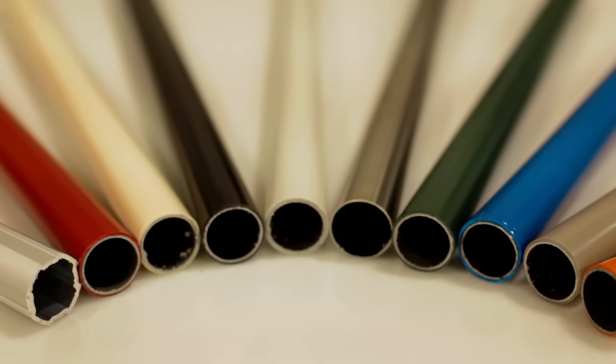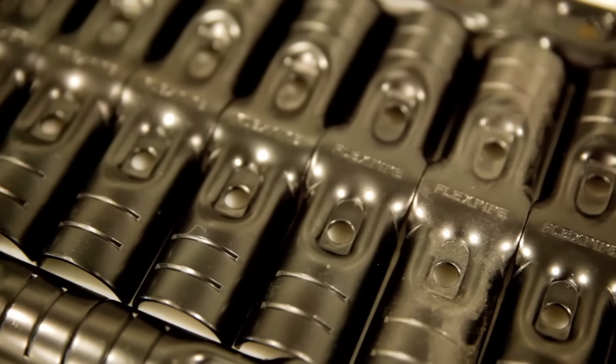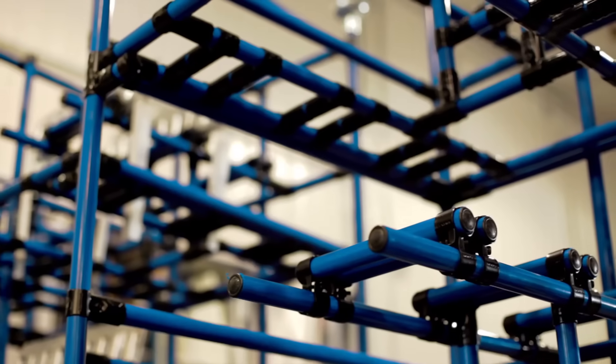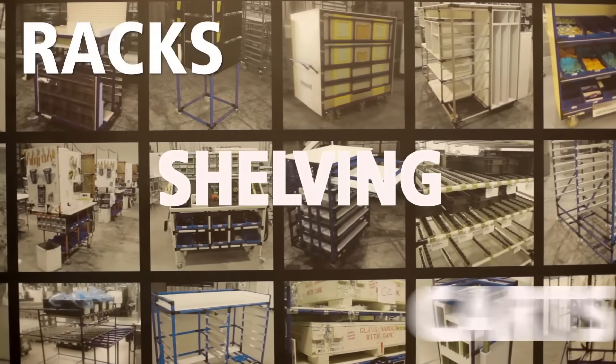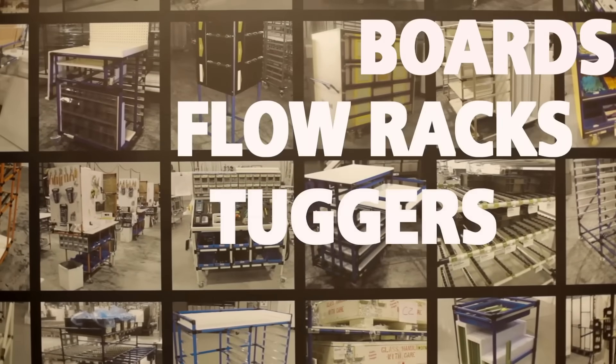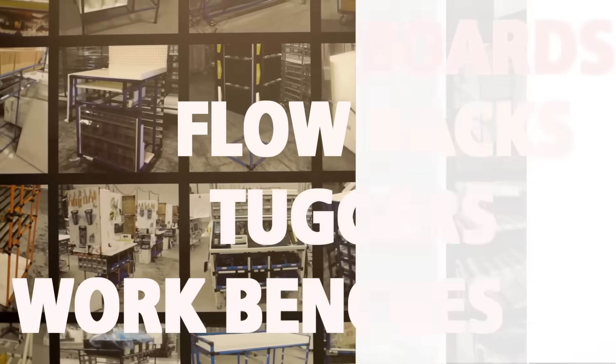FlexPipe is not a flexible pipe, it's a rigid steel pipe, plastic coated with steel connectors to create strong custom structures, such as racks, shelving, carts, boards, floor racks, tuggers and workbenches, or any imaginable structure.